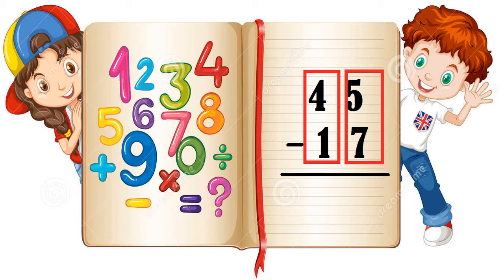Now to make sure we have the numbers in the correct place. For the number 45, 4 goes in the tens place and 5 goes in the ones place. For the number 17, 1 goes in the tens place and 7 goes in the ones place. So we land them in the correct place.